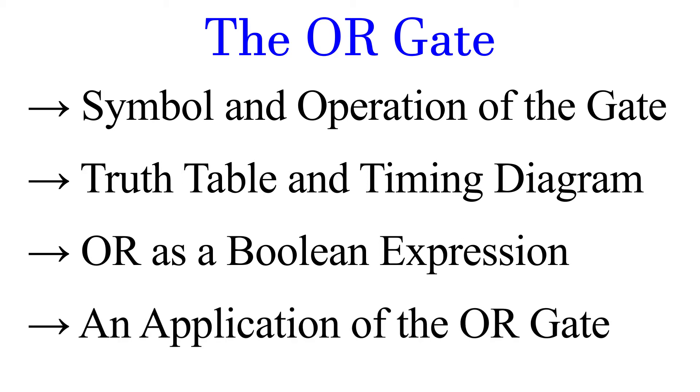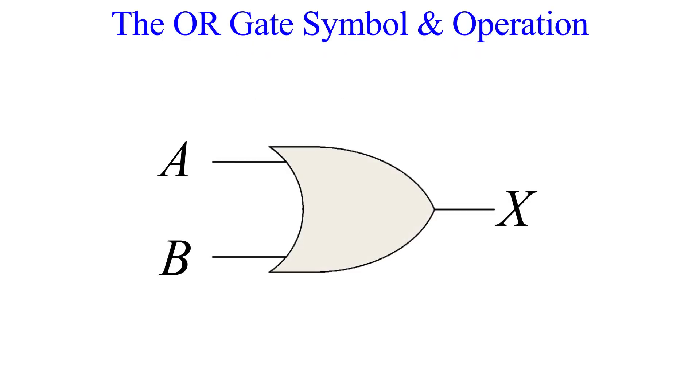So let's start with the symbol and its function. A two input OR gate is shown here, but this gate can have any number of inputs greater than one.